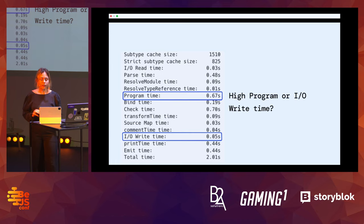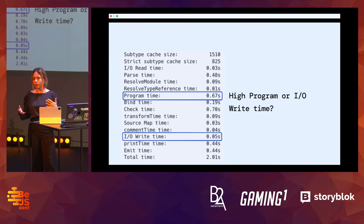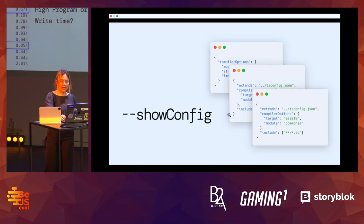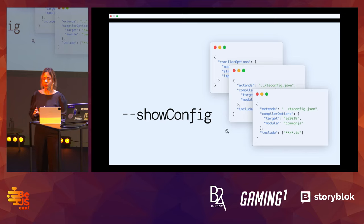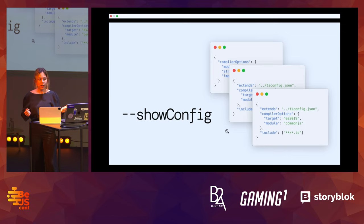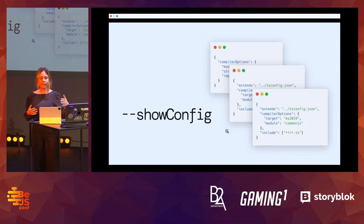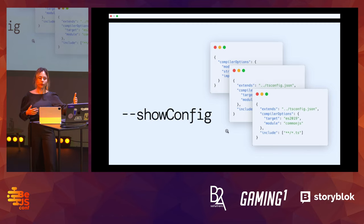A high program or write time can also indicate misconfigured exclude and include settings in your tsconfig. One additional flag you can use to see exactly what configuration TypeScript uses is --showConfig. It's especially useful when you extend over multiple configs — a config that extends another config that extends from yet another one.